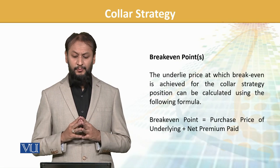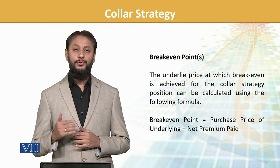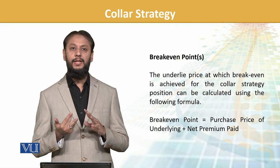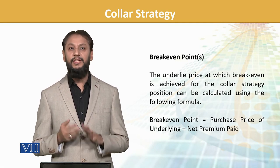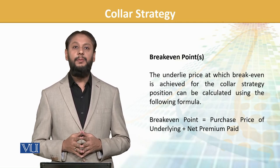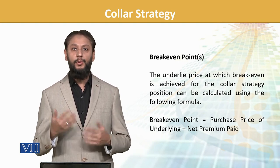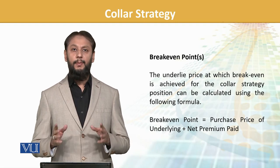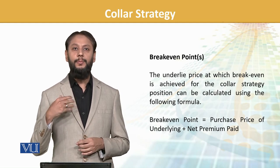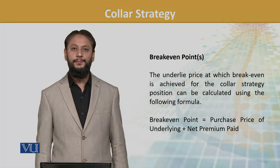The underlying price at which breakeven is achieved for the collar strategy can be calculated using a formula. We have formulas for all three: maximum profit, maximum loss, and breakeven. The breakeven formula is: purchase price plus net premium paid — if we receive it, it will be adjusted accordingly. Both ends are captured within this. In our coming module, we will place figures into these and actually materialize how this strategy works. Thank you.